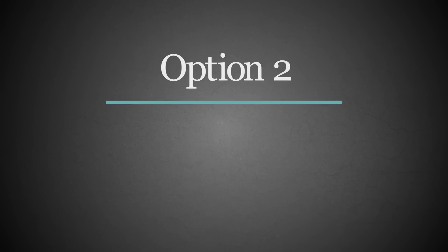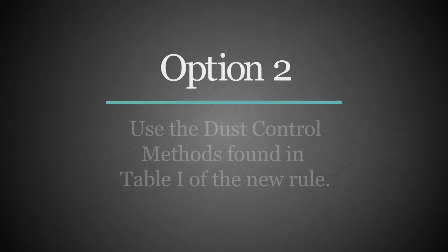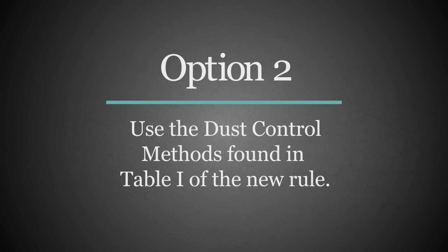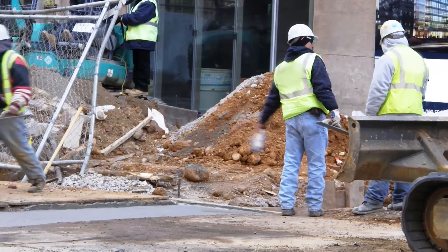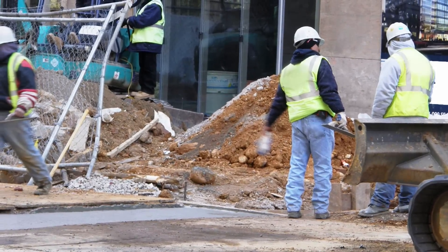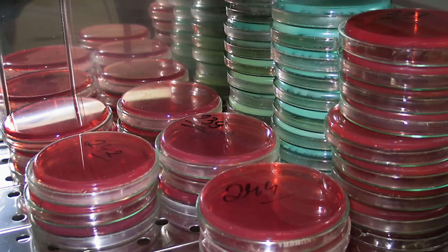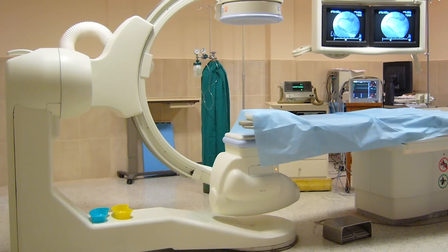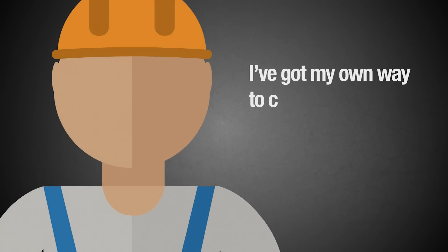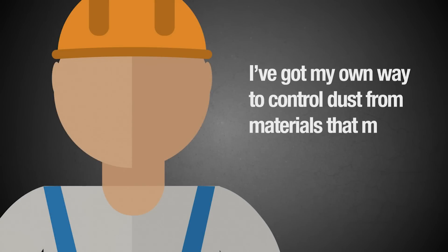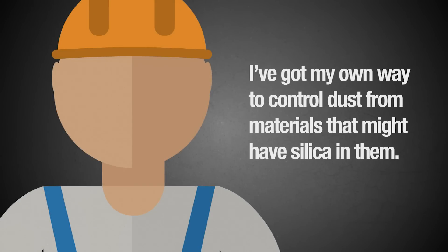Option 2 is to simply follow the dust control methods in Table 1 of the Construction Standard. Measuring PEL can be complicated — it involves placing special monitoring devices on workers and then sending the monitors off to a laboratory for testing, and/or providing medical testing for workers on a regular basis. So basically, you have to say you've got your own way to control the dust, then take the time and expense to test your idea.